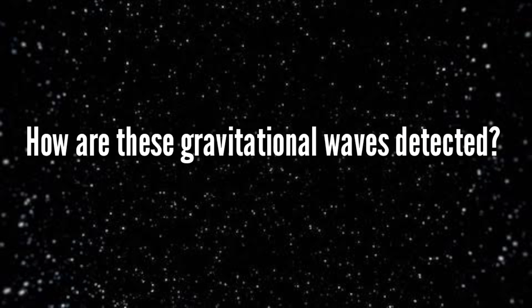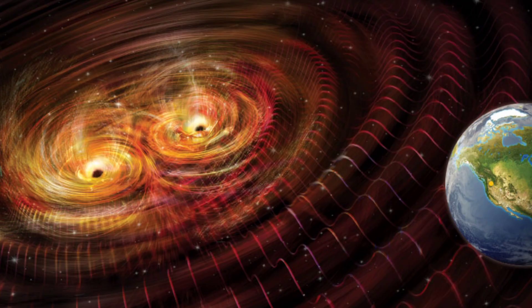So how are these gravitational waves detected? As gravitational waves pass through space, they stretch space in one direction and squeeze in the other direction, and vice versa.